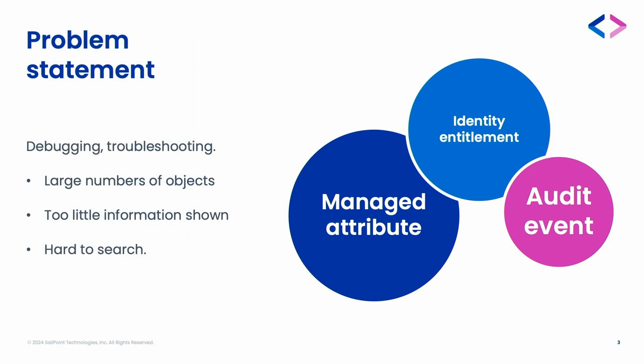The IdentityIQ debug interface is a great tool for analyzing objects, debugging, troubleshooting, and looking at the objects we're dealing with in identity management. But some of these objects exist in very large numbers — hundreds, thousands, tens of thousands, or even hundreds of thousands of the same kind of object. If you want to look at a specific object or one related to a specific user, it's going to take you browsing through many, many pages to find the right object. So it could be very hard to find.